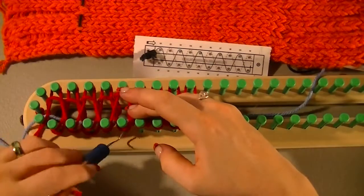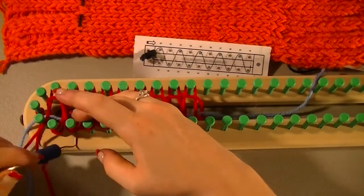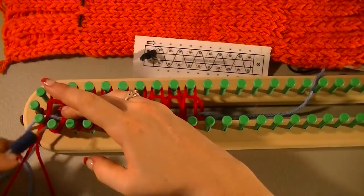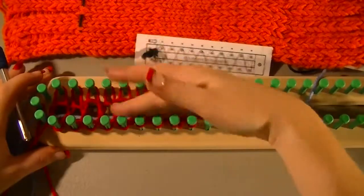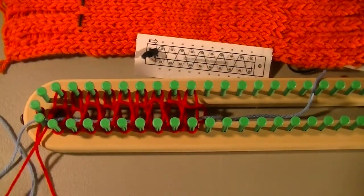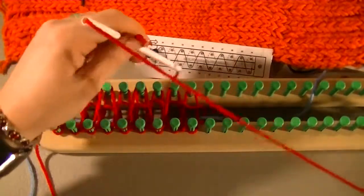You want to make sure every peg is like this. Once every peg has just one loop on it again, you're going to push that down and you're just going to repeat the pattern until you get your project as long as you want.